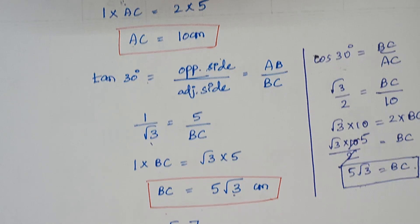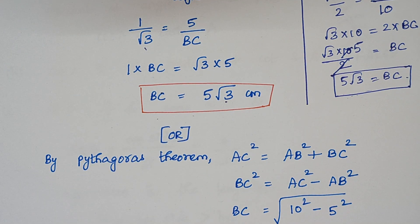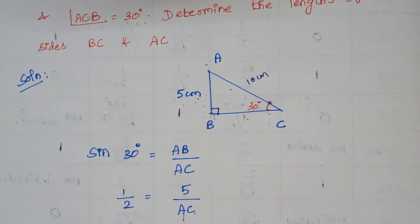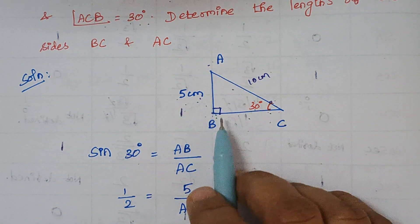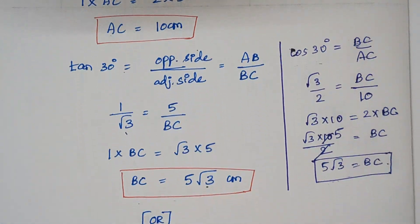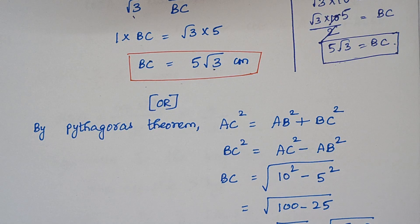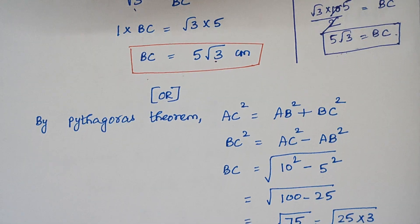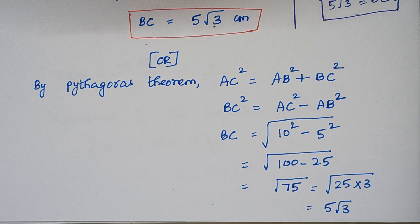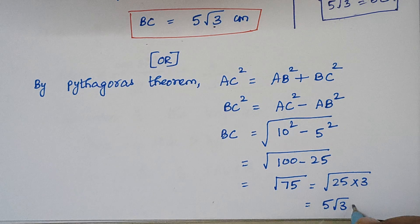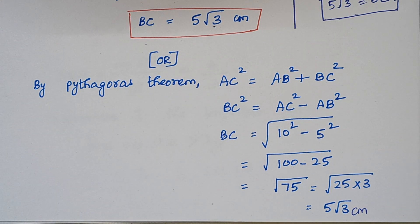We can also use the Pythagorean theorem: AC² = AB² + BC². Rearranging and substituting the values, we again get BC = 5√3 centimeters. There is no specific rule — you can solve the problem by any method. Now we proceed with the next problem.